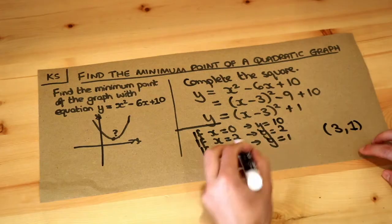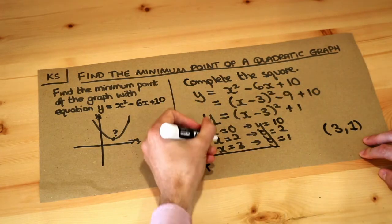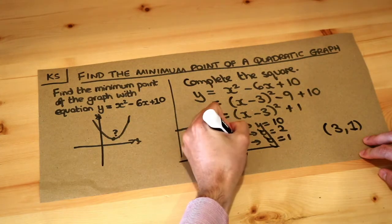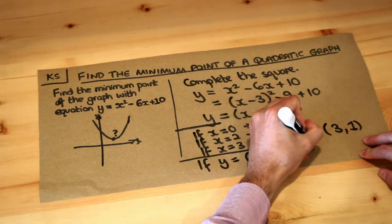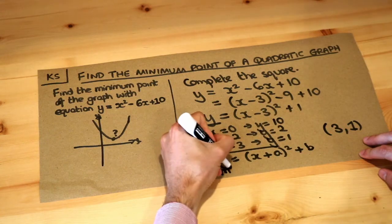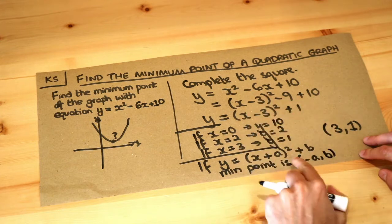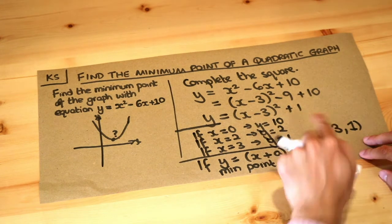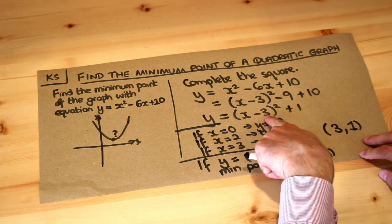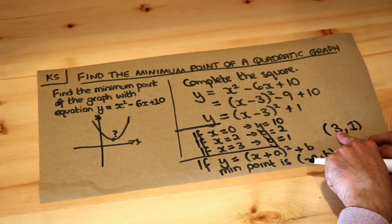But in general for your notes, if you've got your quadratic equation in the form x plus a squared plus b, then the minimum point is negative a, b. So whatever the number is after the x, you negate it and that will be the x value. In this particular case we have minus 3 here, we negate it, it becomes positive 3, so that's the x value of your minimum point.